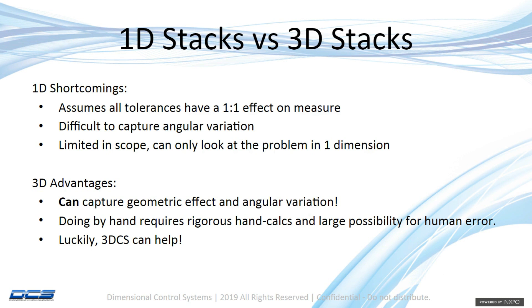Some of the shortcomings of 1D stacks are that it assumes your tolerances all have a one-to-one relationship to your measurement, and it doesn't take into effect any of the angularity or geometric effect from how your components locate to each other. When you're doing 1D stacks, you pretty much have to stack your product in all three directions anyway to confirm that everything is going to be within its dimensional specifications, so we should just go ahead and do a 3D stack automatically.